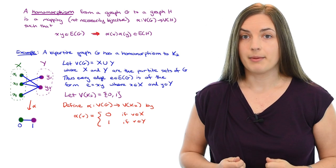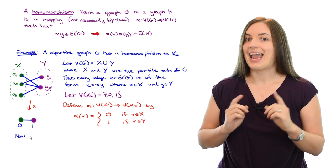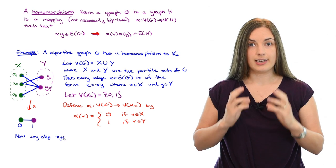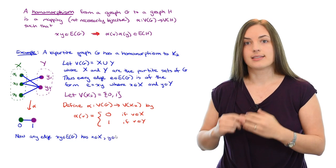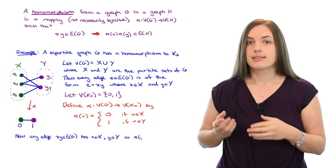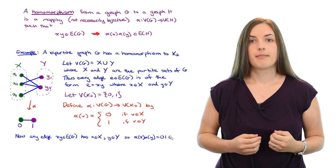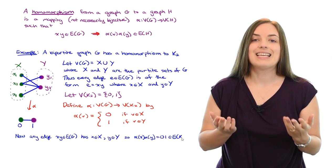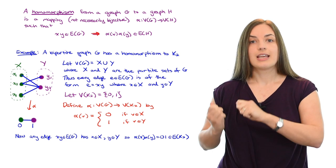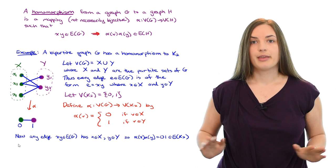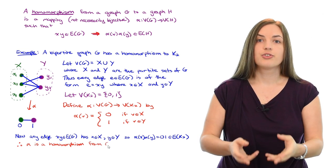Now let's check that this mapping alpha is indeed a homomorphism. Well, if we take any edge x, y in the edge set of G, we know by definition that x is in the set X and y is in the set Y. So that means that alpha of x alpha of y equals 0, 1 and the edge 0, 1 is an edge in the graph K2. So that tells us that all edges get mapped to edges and therefore we have a homomorphism from a bipartite graph to the graph K2.